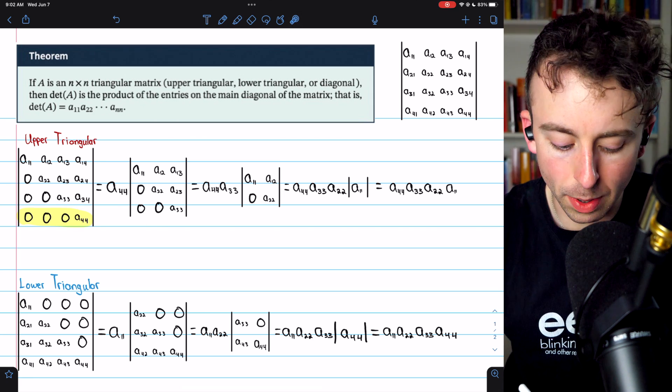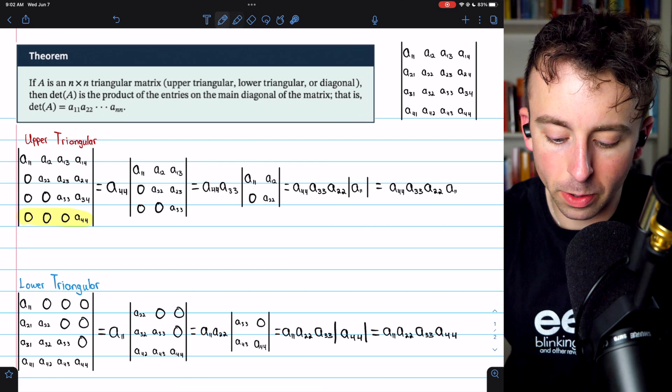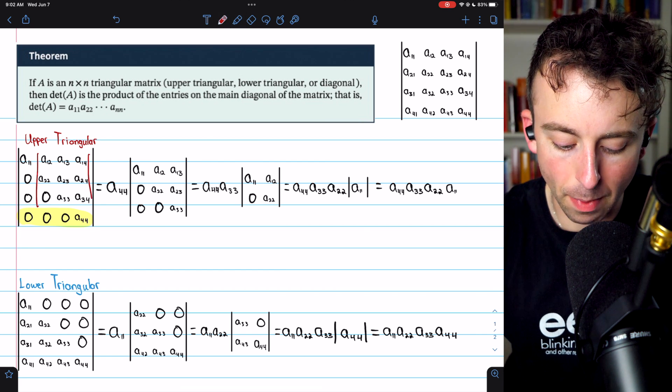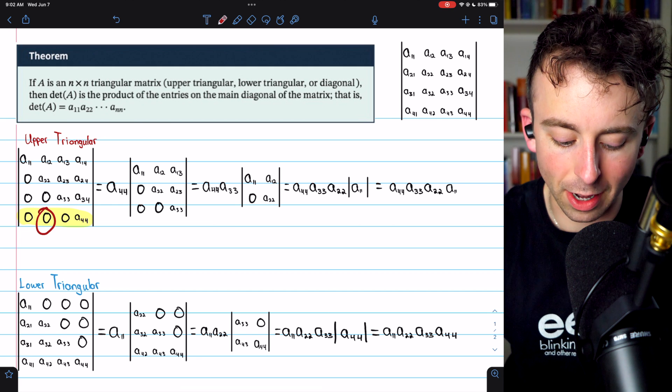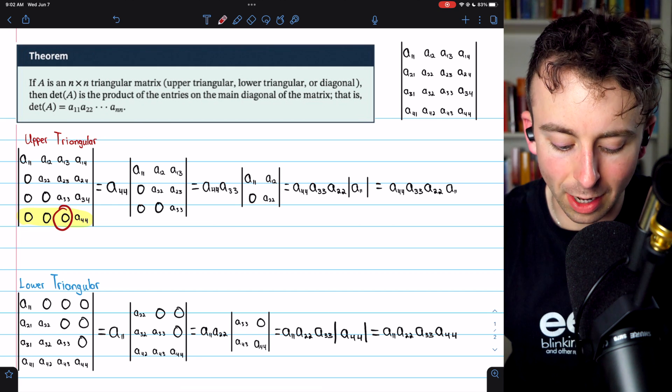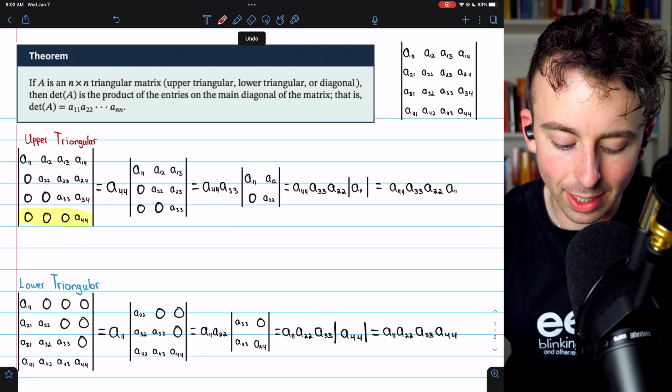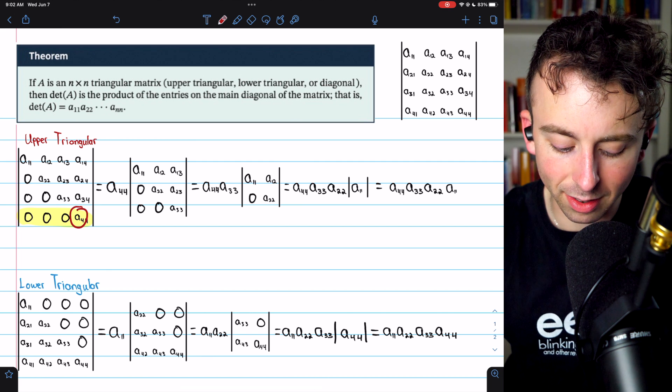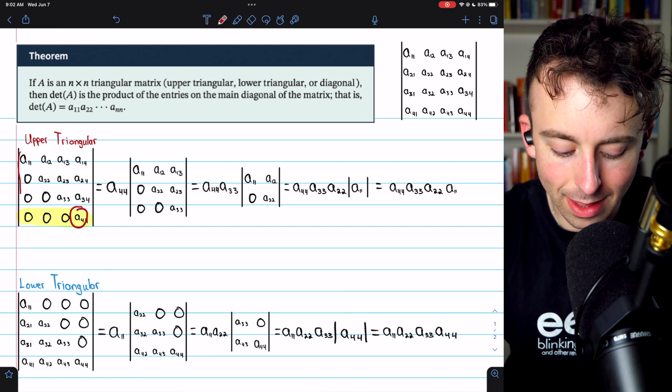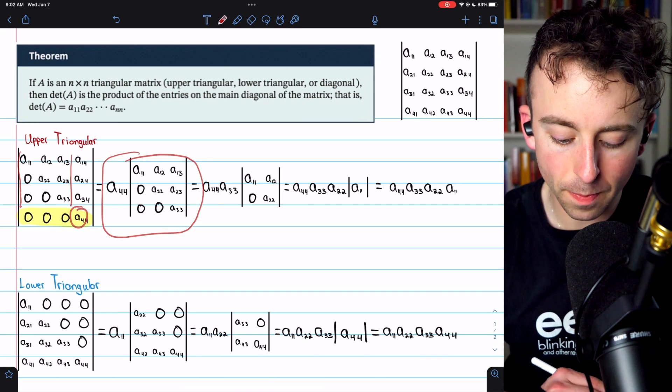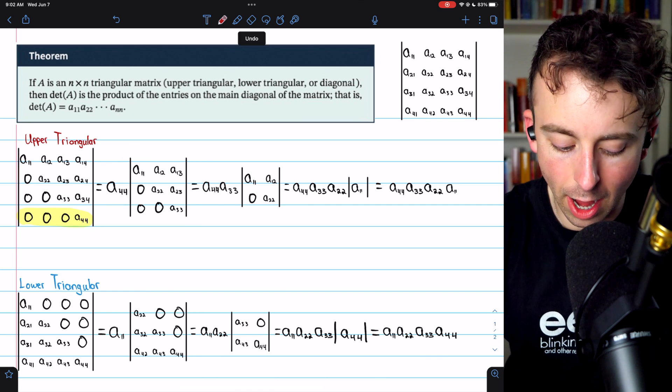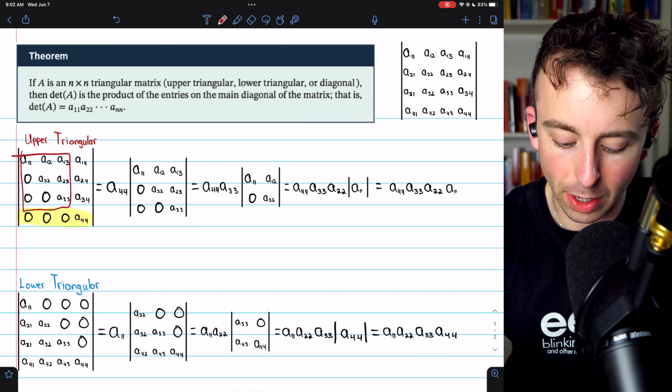Then the determinant will be this first entry, zero, times the determinant of this minor matrix, and that's just going to be zero. It will be similar for this entry, zero, similar for this entry, zero. And then finally, the only non-zero term will be this entry multiplied by the determinant of this sub-matrix. And that's what you see here. So we have A44 times the determinant of that sub-matrix.